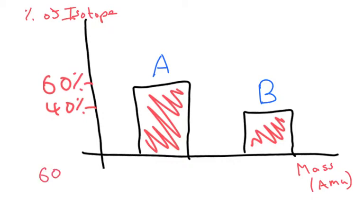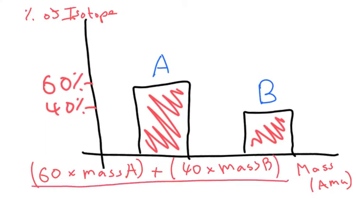Well I'll do 60 times by the mass of A plus 40 times the mass of B, and all divided by 60 plus 40 which is 100.